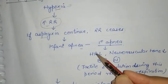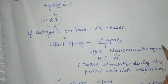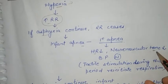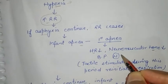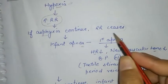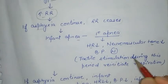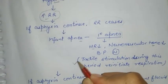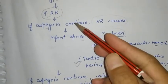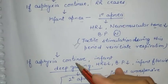Signs of primary apnea include decreased heart rate, decreased neuromuscular tone meaning decreased activity of the child, and normal blood pressure. Management involves tactile stimulation so that the neonate can re-initiate respiration.